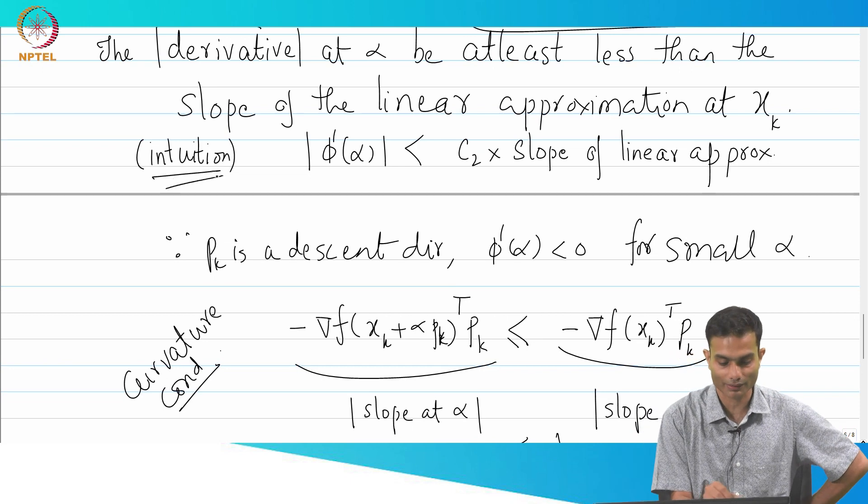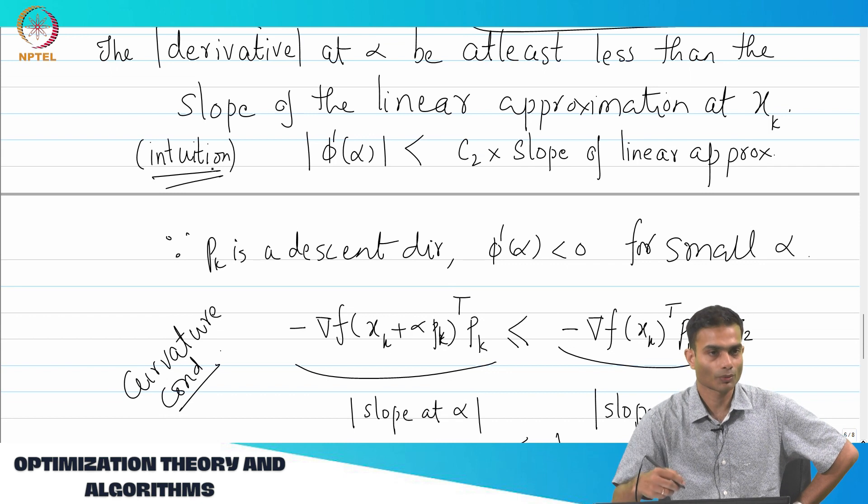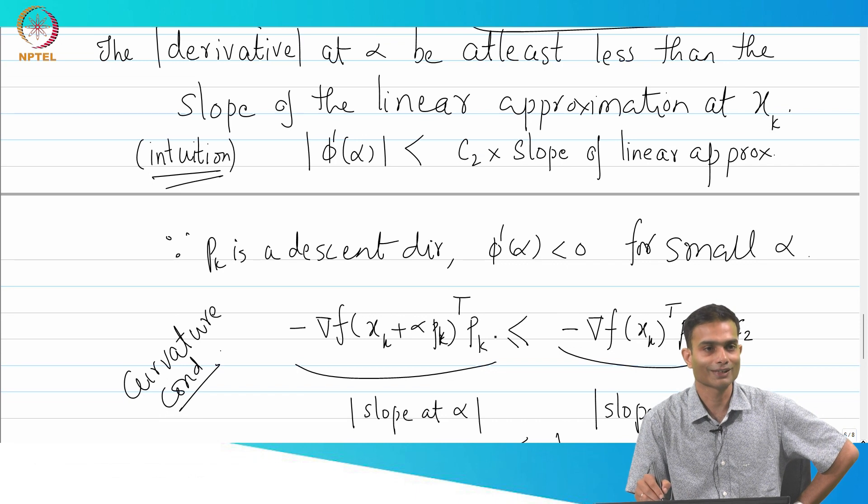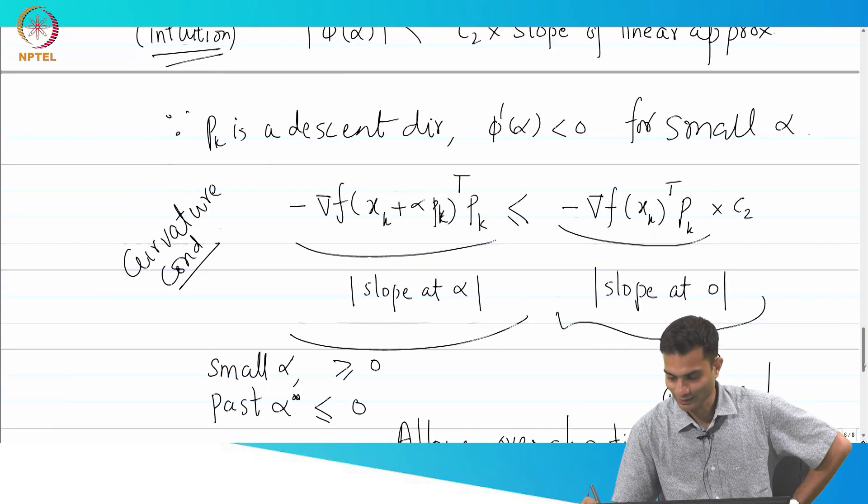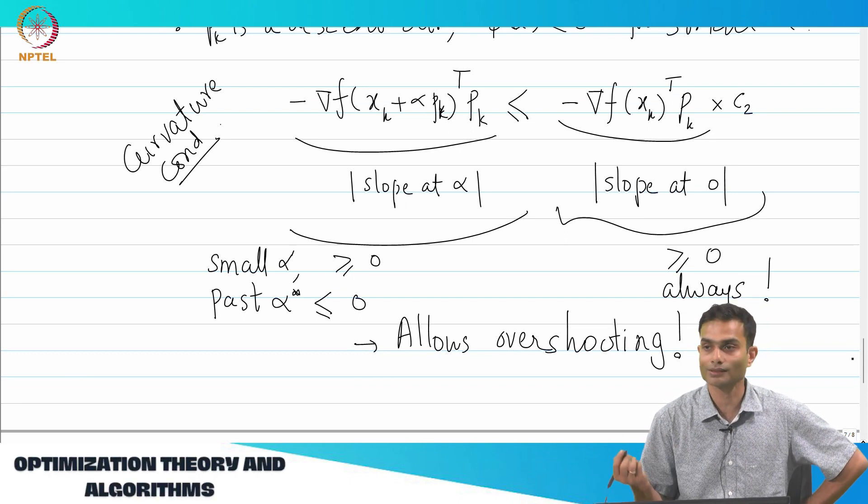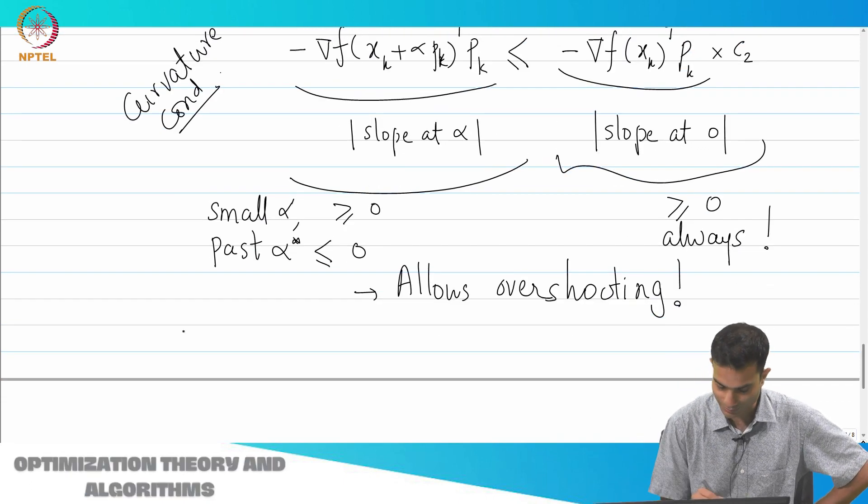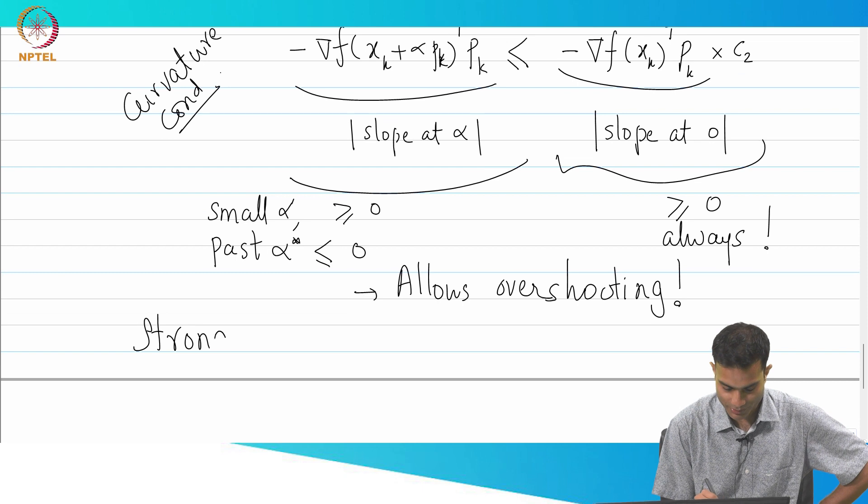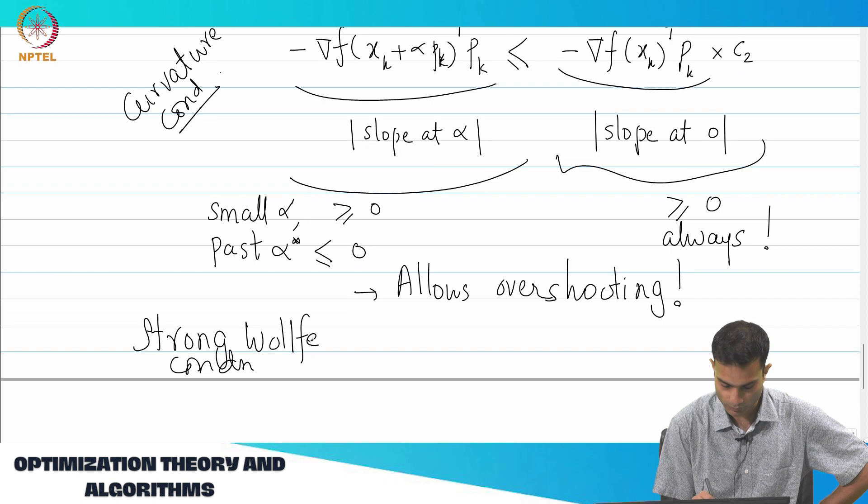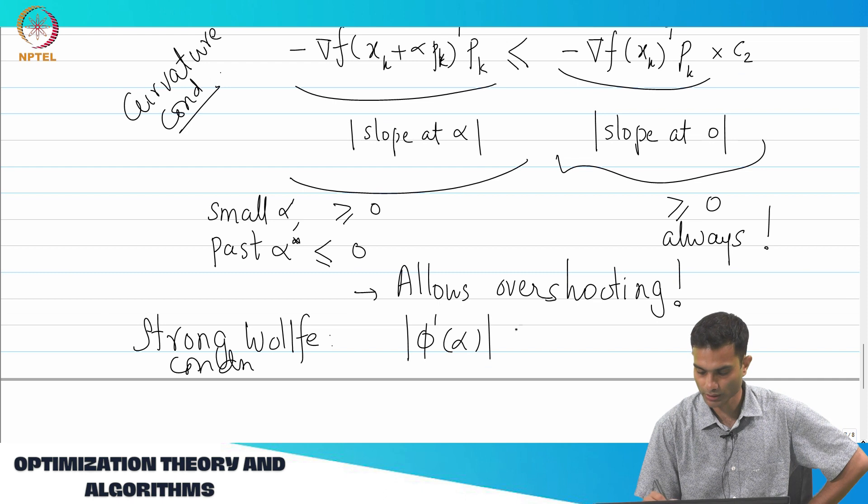Correct, correct. He is right. Actually, our intuition was correct. Our intuition put a mod over there. We messed it up. I mean Wolf kind of messed it up when he wrote it out explicitly with the minus signs. If you put a mod over there, you get what is called the strong Wolf condition. It is very intuitive, it sounds fancy, but there is nothing too different about it. The strong Wolf condition simply says that now put a mod sign over here.